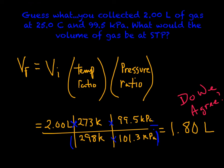298 Kelvin times 101.3 kilopascals, and then I'd close it with a parenthesis. So 2.00 liters times 273 Kelvin times 99.5 kilopascals, divided by, in parenthesis, 298 Kelvin times 101.3 kilopascals.